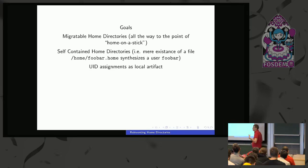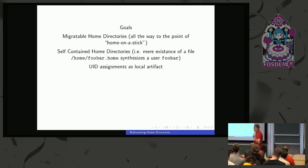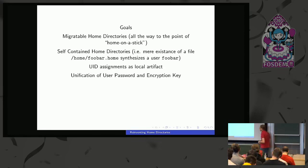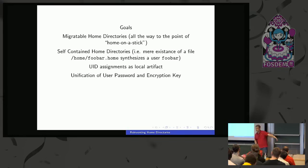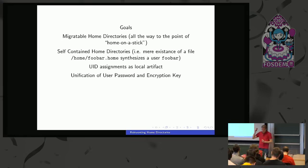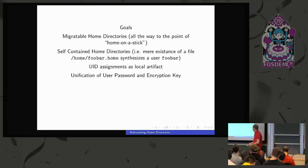UID assignments should become local artifacts — at the moment you log in, the UID gets assigned and is valid for this local system. When you move the home directory to another system, ideally you get the same UID, but if it's taken there already, you get a different one and we handle that gracefully. UIDs become local artifacts by default, but if you want a fixed one, that's still supported. People shouldn't have to think about synchronizing UIDs across an entire organization.